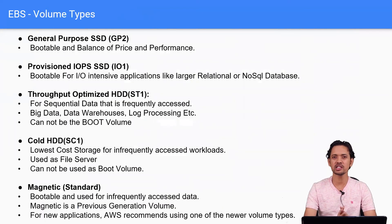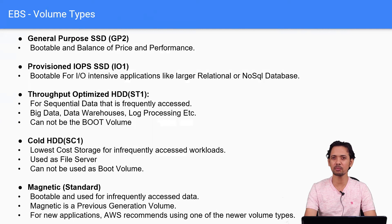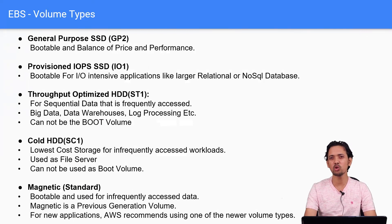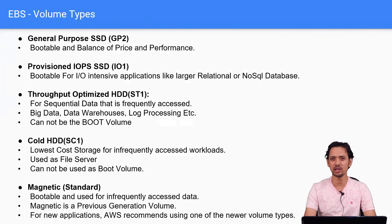To summarize: general purpose SSDs are good if you want to balance price and performance for normal workloads. Provisioned IOPS is good for high IOPS requirements with heavy transactional workloads. Throughput optimized HDD is for big data applications and data warehouses. Cold HDD is for infrequently accessed workloads with high volume data. Magnetic disks are no longer recommended — they have low IOPS and are used only for infrequently accessed workloads. Out of these, throughput optimized HDD and cold HDD are not bootable, so you cannot use them as a root volume.